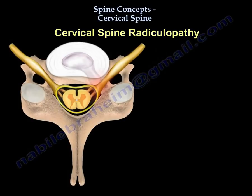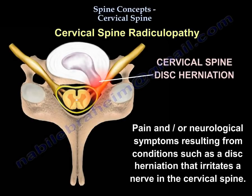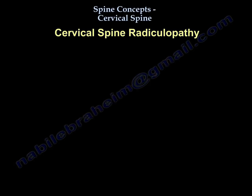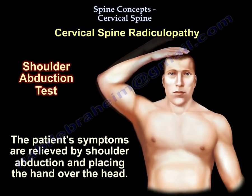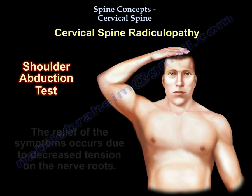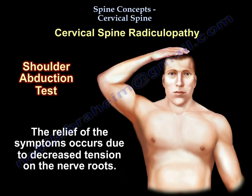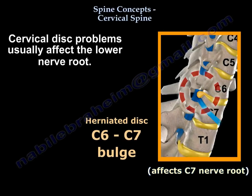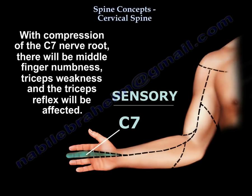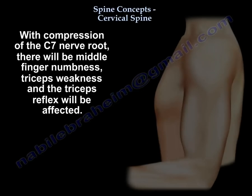Now let's go to cervical radiculopathy. The cervical spine and shoulder problems overlap. You know the condition is of cervical etiology if relief of pain occurs with shoulder abduction by placing the hand over the head. In cervical disc problems, be aware of false positive MRIs. It usually involves the lower-numbered root: at C6-C7 you get the C7 nerve root, giving middle finger numbness, triceps weakness, and an affected triceps reflex.